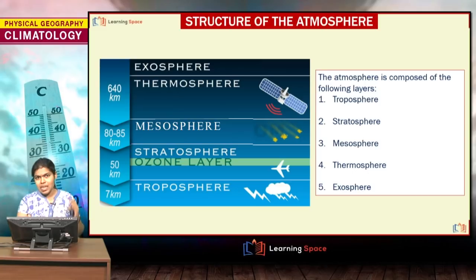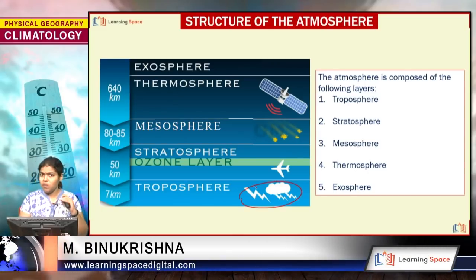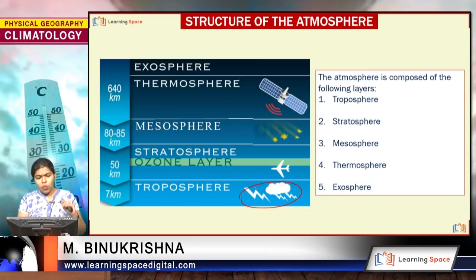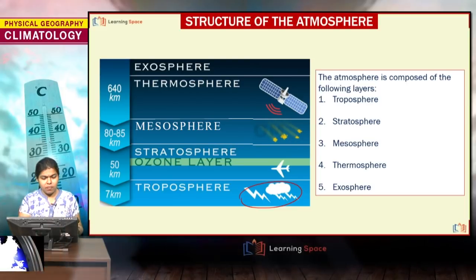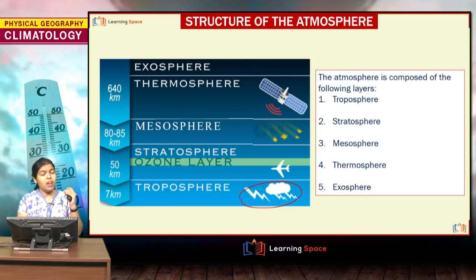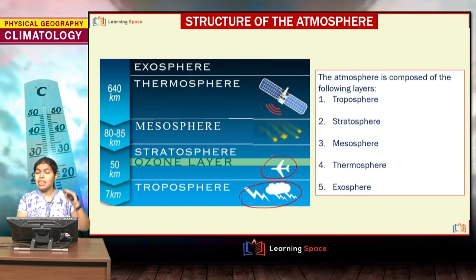As you can see in the picture, the troposphere is where you have all of the weather activity. In the stratosphere, you have the ozonosphere, which is very important for living organisms. The stratosphere is also the layer where commercial aircraft fly because of the less turbulence there.